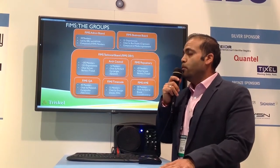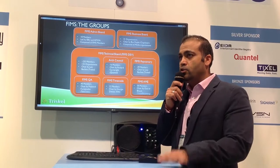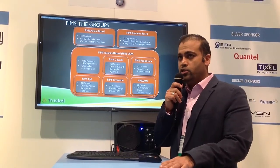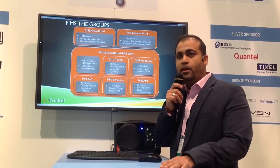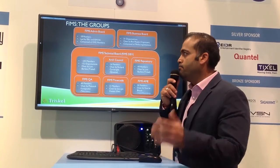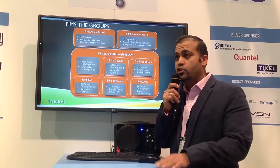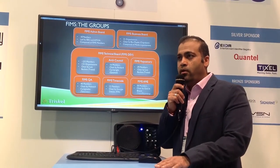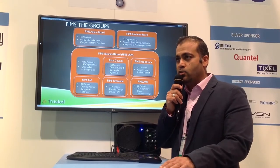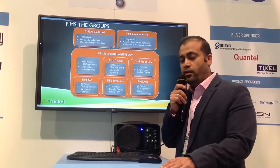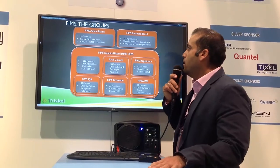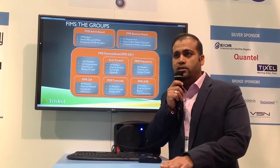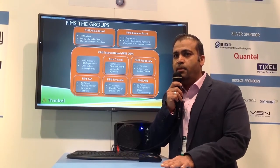The FIMS group is divided at the higher level into two separate areas. One is the admin board, which is primarily made up of media organizations. There are a large number of them, and you can refer to all the different organizations on the EBU website as well as the AMWA or in general the FIMS website. There is also the admin board, which is comprised of both vendors and media organizations.